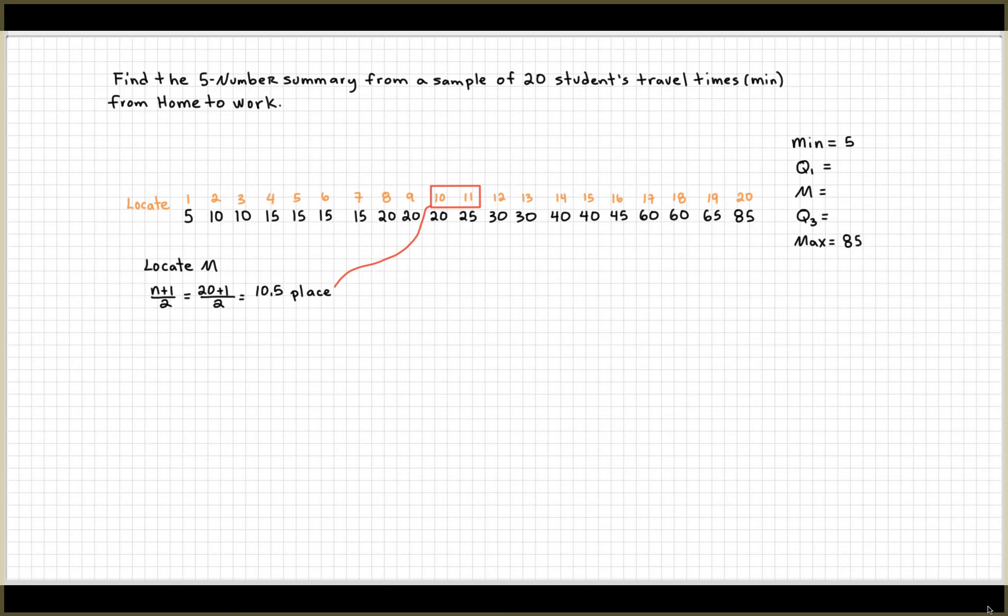20 plus one is going to be 21 divided by two is 10.5, and 10.5 place. So the median is between 20 and 25. The median I'm going to have to take 20 plus 25 divided by two, find the average, and that's going to be 22.5. So that's going to be the median.